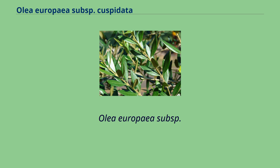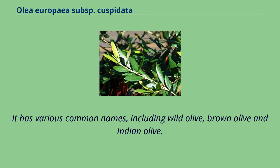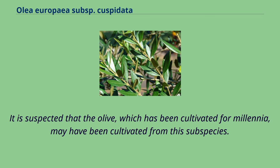Olea europaea subsp. cuspidata is a subspecies of the well-known olive tree, which until recently was considered a separate species and is still mentioned as such in many sources. It has various common names, including wild olive, brown olive, and Indian olive. It is suspected that the olive, which has been cultivated for millennia, may have been cultivated from this subspecies.